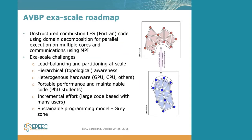Here's a brief glimpse of what AVBP is and what our Exascale roadmap looks like. AVBP is an unstructured combustion large eddy simulation code. It's a Fortran code and uses domain decomposition for parallelization across multiple nodes or cores, with MPI as a communication layer. As shown in the figure on the right, we decompose the unstructured mesh into domains, and each domain communicates and performs computation in parallel.